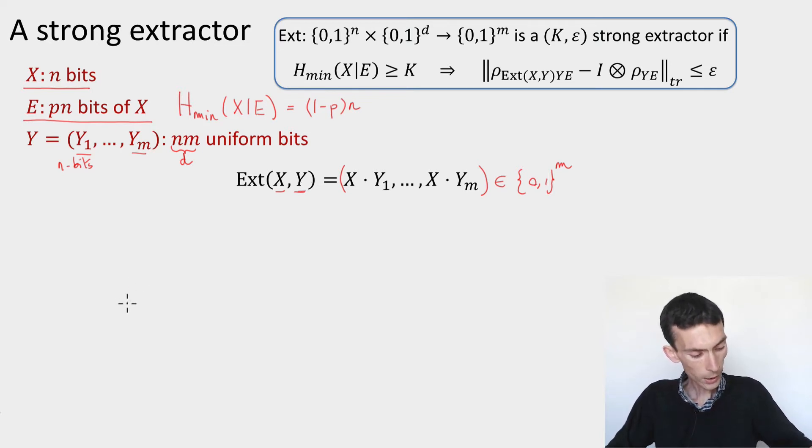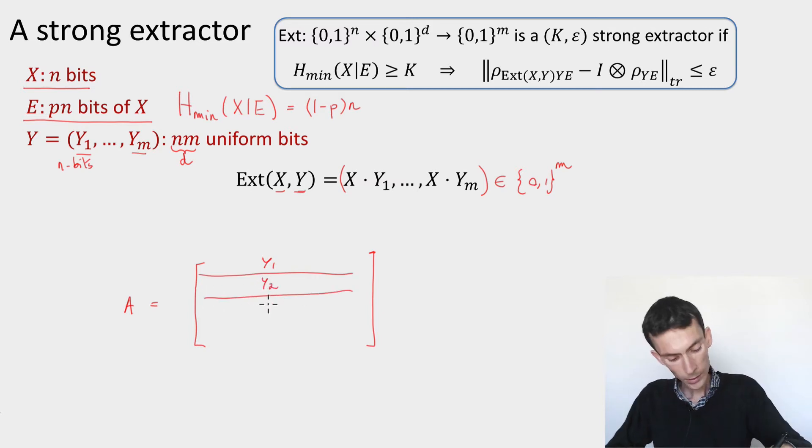Let's consider matrix A, which is simply the matrix whose rows are given by the y's. So it's a matrix that's pretty long, and the first row is y1, second row is y2, up to ym. Now, I can think of x as a column vector of n bits, and z as the product of A times x.